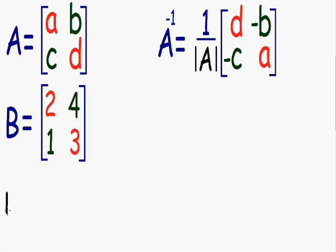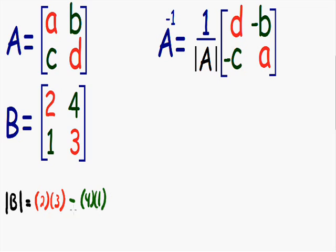The determinant of matrix B: first I need to multiply the red diagonal. Notice how we have a 2 and a 3, so I'm going to multiply 2 times 3. Then we need to subtract and multiply the green diagonal — we have 4 times 1. So the determinant of matrix B is equal to 2 times 3, which is 6, minus 4 times 1, which is 4. 6 minus 4 is equal to 2.